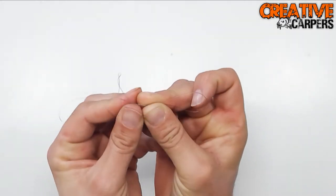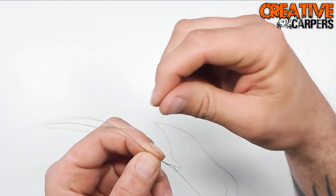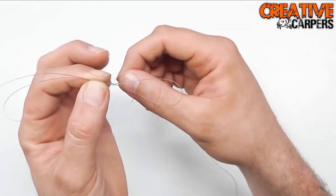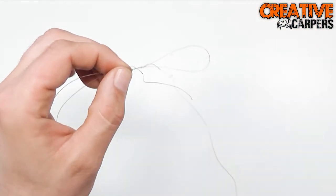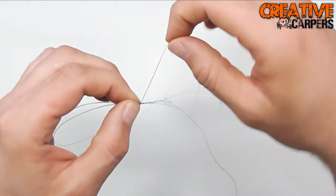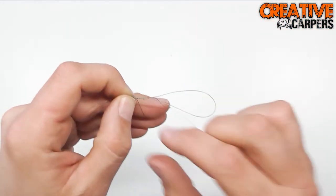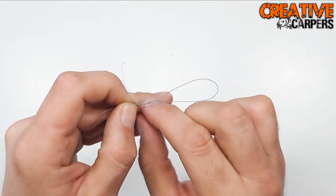Then just clamp that, swap hands, clamp that in your finger, and then you want to go back down five times. So one, two, three, four, five.